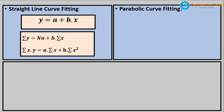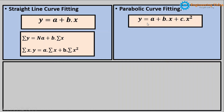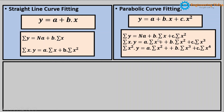Now we will see the mathematical expression for parabolic curve fitting. The general equation of a parabolic curve is y equal to a plus b into x plus c into x square. To calculate the value of a, b, and c we can use three equations. This is also simple — we memorize the first one and after multiplying by x on both sides we can derive the remaining two. The first equation is summation of y equal to n into a plus b into summation of x plus c into summation of x square.